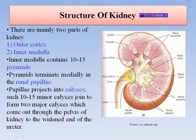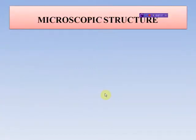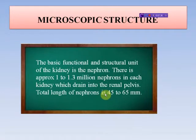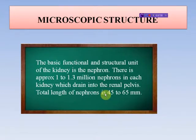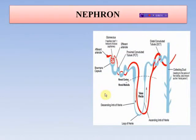Next comes the microscopic structure of the kidney. The basic functional and structural unit of the kidney is the nephron. There are approximately 1 to 1.3 million nephrons in each kidney, which drain into the renal pelvis. The total length of a nephron is 45 to 65 mm. Each nephron has a diameter of 20 to 60 micrometers and a length of about 3 cm.